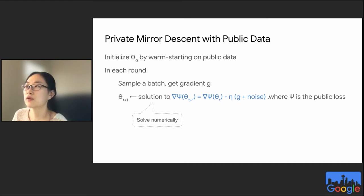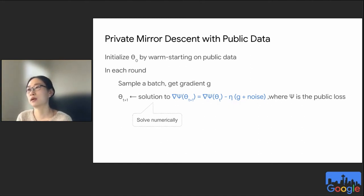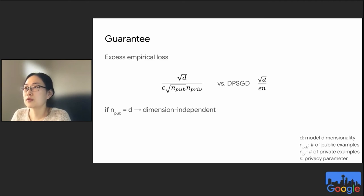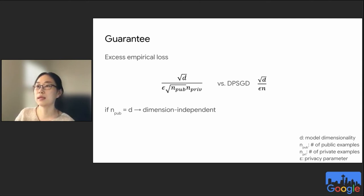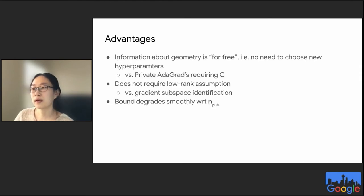We propose using the loss function on the public data to define our psi function, with the private gradient as our gradient. To take full advantage of public data, we initialize the model theta_0 by pre-training on the public data. Our empirical loss then becomes of order sqrt(d) over epsilon times sqrt(n_pub times n_priv), where n_pub and n_priv are the numbers of public and private samples. If n_pub is roughly on the order of d, we get a bound independent of model dimensionality — a significant gain over standard DP-SGD when d is large. Our algorithm uses public data in a more automatic way without low-rank assumptions, and the bound degrades smoothly with the number of public examples.